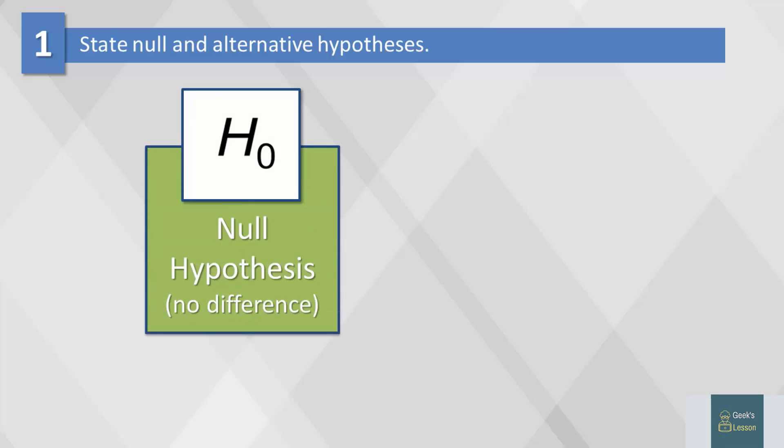The null hypothesis, abbreviated H0, is a statement of no difference. In other words, the null hypothesis argues that there is no significant difference between our specified populations and that any observed difference is due to sampling or experimental error.